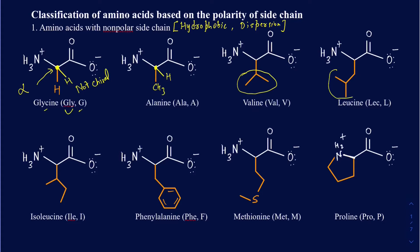This next one, leucine, is going to have an isobutyl group. Isoleucine is going to have a sec-butyl group. And then you have phenylalanine — it's similar to alanine but with a phenyl group attached to it, that's why it's called phenylalanine. The three-letter code is PHE and the one-letter code is F. Just because it starts with P doesn't necessarily mean its one-letter code is going to be P. The one-letter code may not match with the first letter of the name.